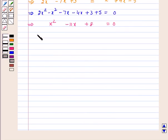So, the given equation is of the form ax square plus bx plus c is equal to 0.